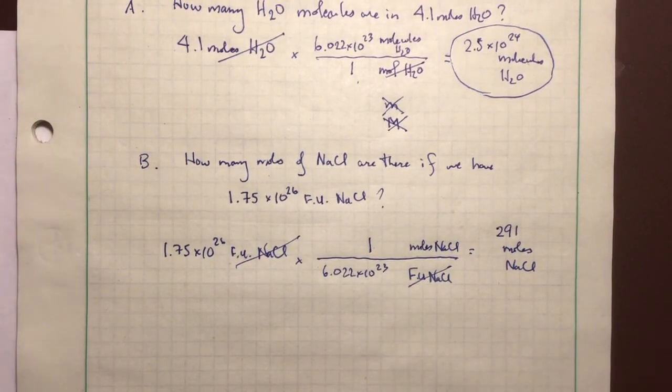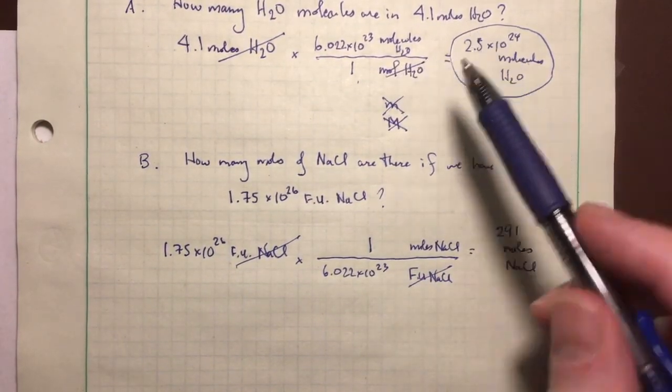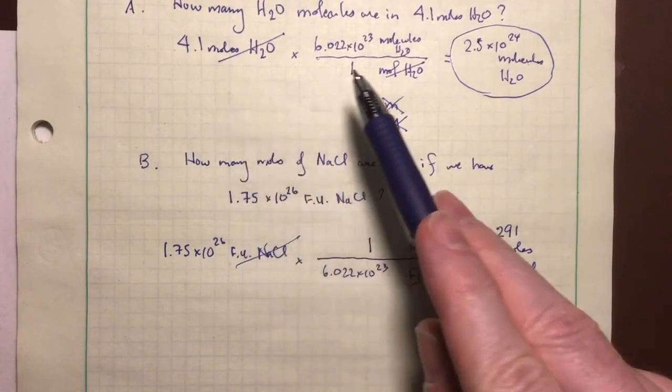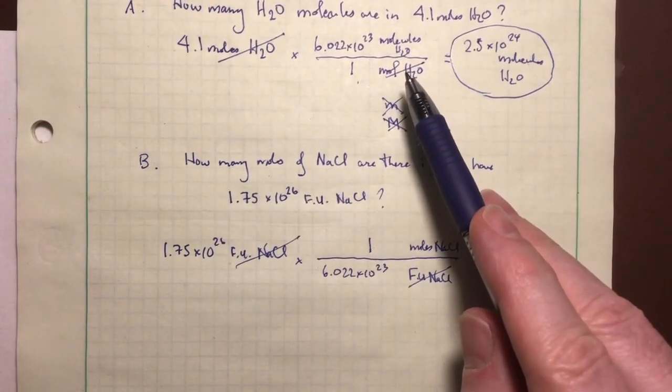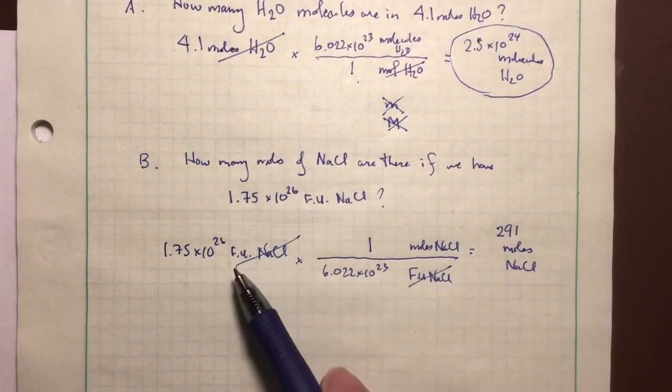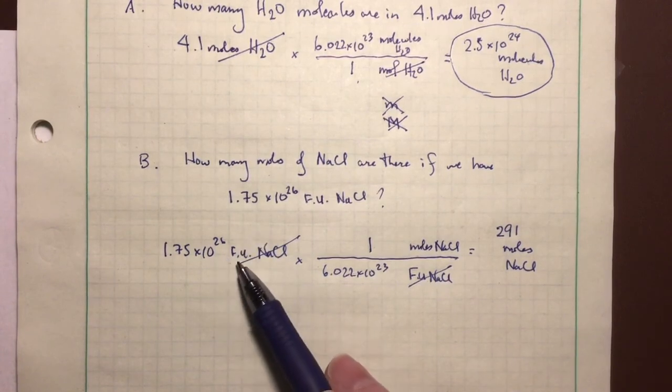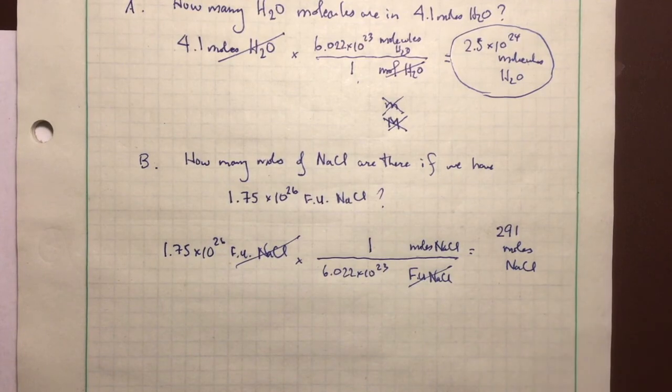Okay, so I just wanted to go through a couple of practice problems there, just to flesh out this idea of being able to use Avogadro's number in conversion factors to be able to convert from moles to particles, whether the particles are molecules, or atoms, or formula units, or electrons, or whatever. And then to be able to go backward, to be able to convert from the number of particles, like the formula unit of the sodium chloride is a particle, to the number of moles of something.